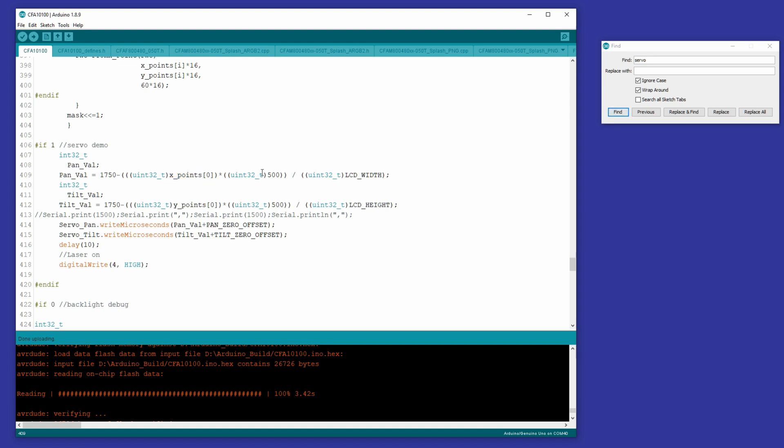And we scale it by 500, which is how far we let the servo go right to left. And we divide that by the width, which is the width of the display.